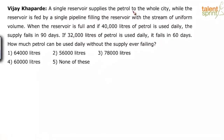A single reservoir supplies petrol to the whole city, while the reservoir is fed by a single pipeline filling it with a stream of uniform volume. When the reservoir is full and 40,000 liters of petrol is used daily, the supply fails in 90 days. If 32,000 liters is used daily, it fails in 60 days. How much petrol can be used daily without the supply ever failing?